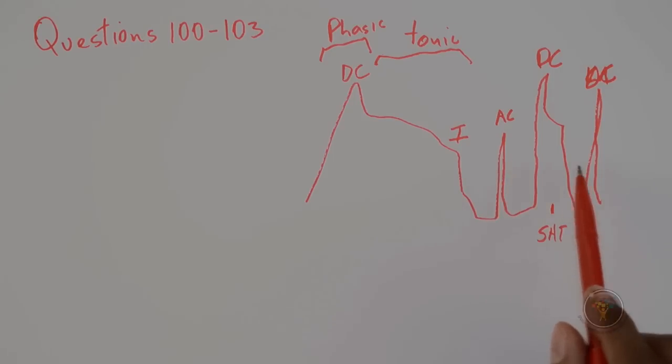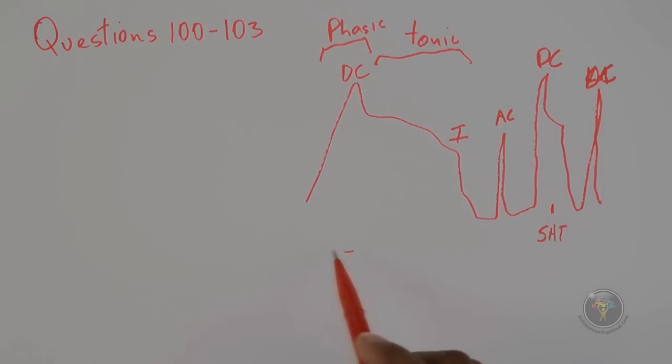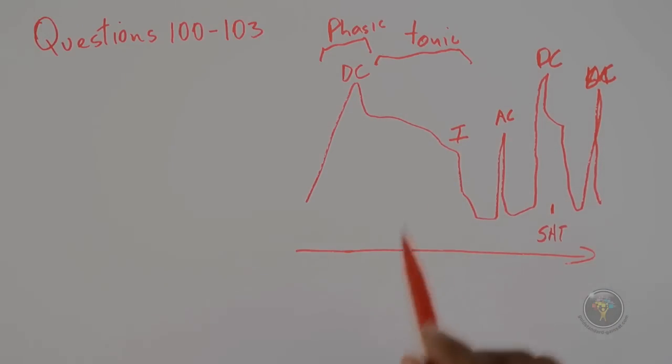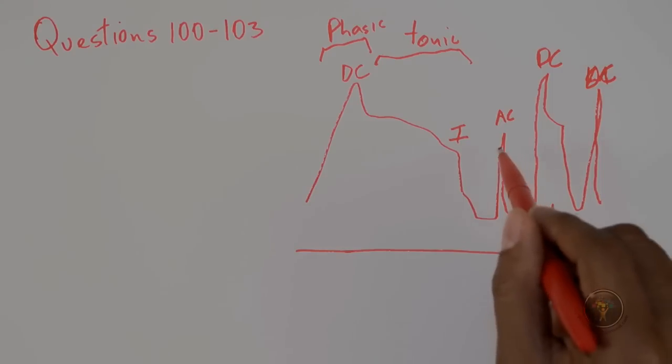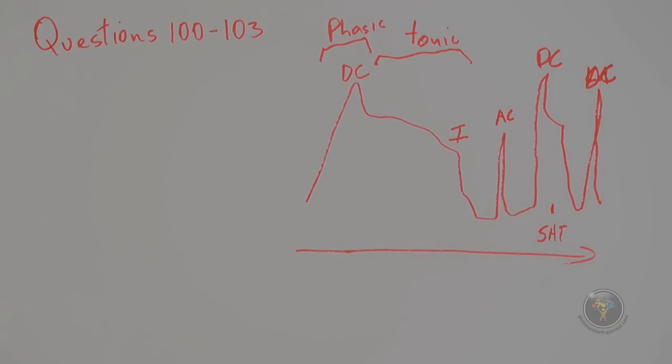And then B, failed to induce a prolonged contraction. This is that tonic prolonged contraction as time is going by here, so it's clear that this did not. So answer choice B is correct.